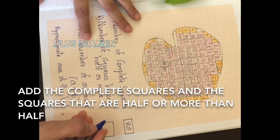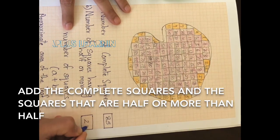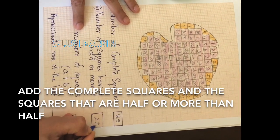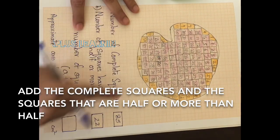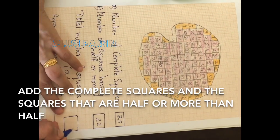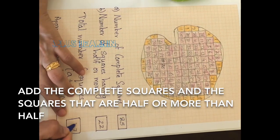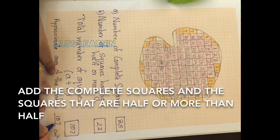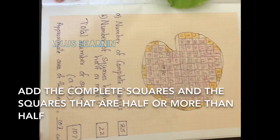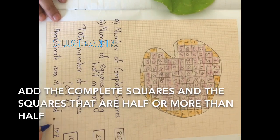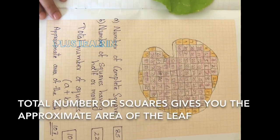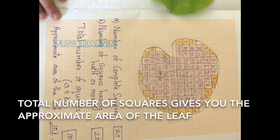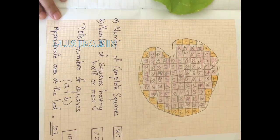Now write the total number of complete squares and the squares that are half or more into the boxes below. Add these two numbers and the total gives you the approximate area of the leaf. Isn't it super easy, children?